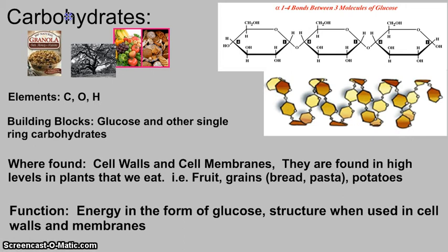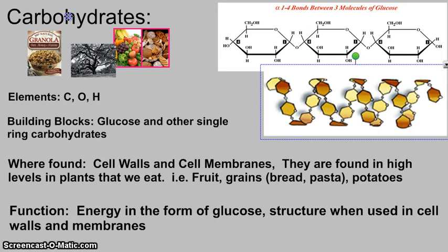Carbohydrates are made up of the elements carbon, oxygen, and hydrogen only. Their building blocks are glucose and other single-ring carbohydrates — they are a series of rings. They're found in cell walls and cell membranes, and found in high levels in the plants that we eat. This is why you hear about carbs in fruits, grains, potatoes, and things like that. Their role in living things is to provide energy in the form of glucose, and for plants and your cells, they provide some structure in cell walls and cell membranes.